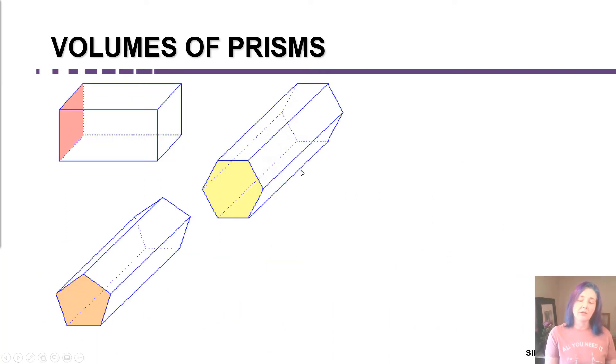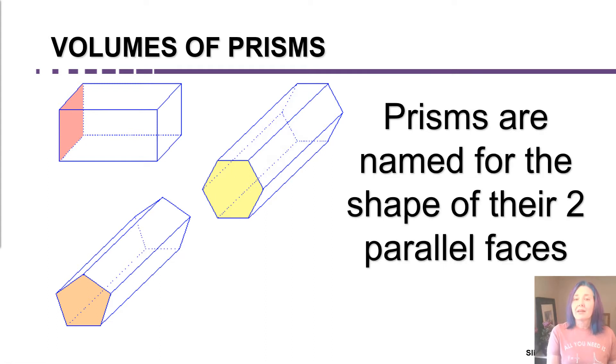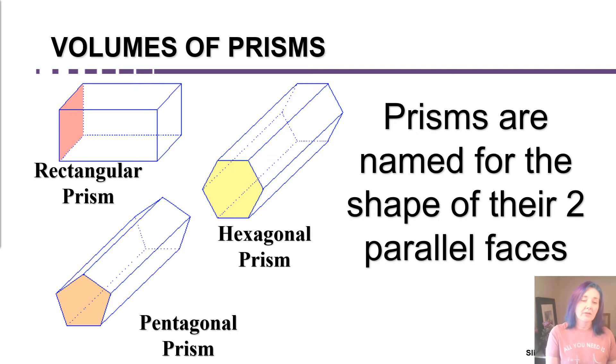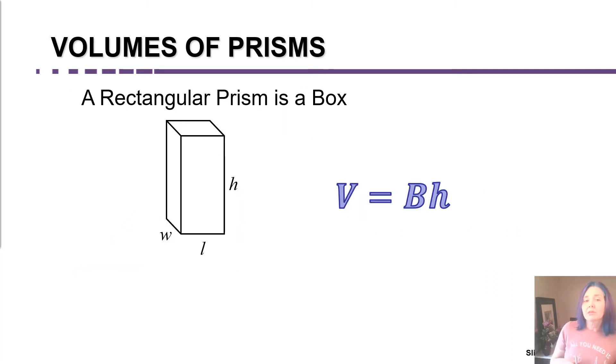Those faces that are congruent polygons, they can be any shape. Prisms are named according to that shape. On the left here, I have a rectangular prism, a hexagonal prism, and a pentagonal prism. We actually have already learned about finding the volume of a box, and a box is an example of a rectangular prism.